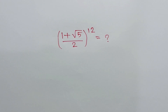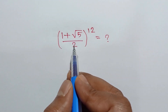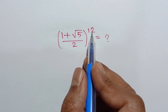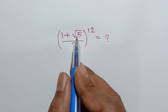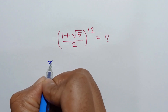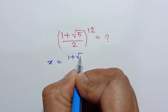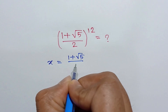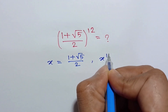Hi everyone. In this video I am going to show how to find the value of (1 + √5)/2 whole to the power 12. If we consider (1 + √5)/2 as x, so we will have x = (1 + √5)/2, and then we have to find the value of x to the power 12.